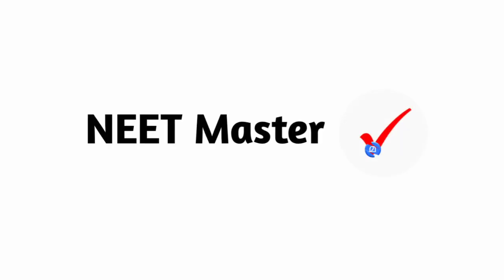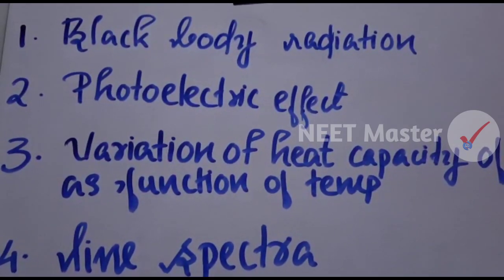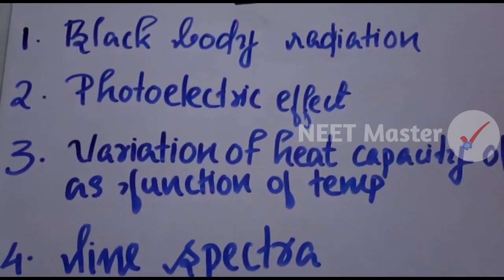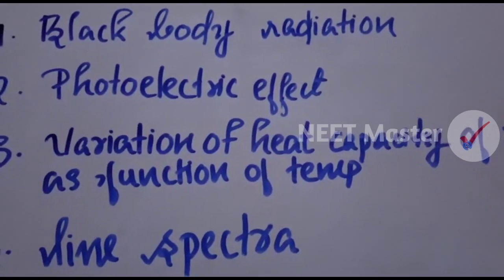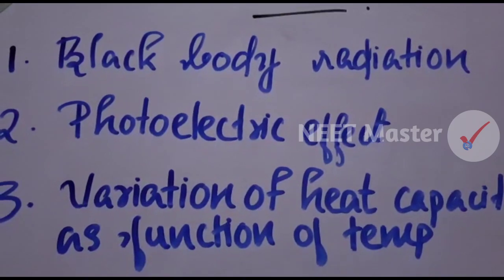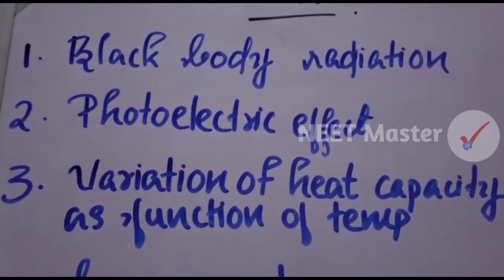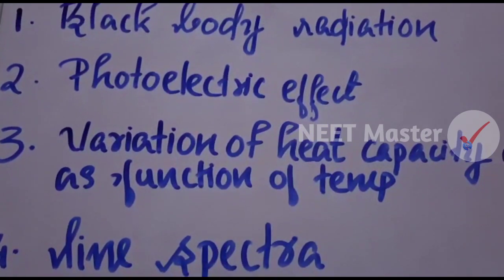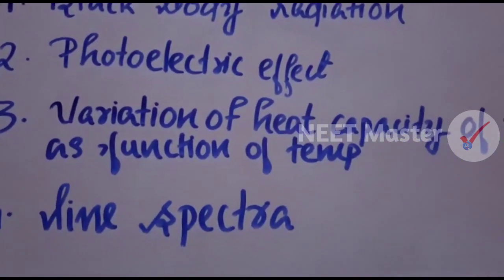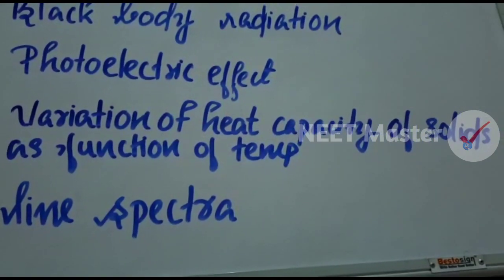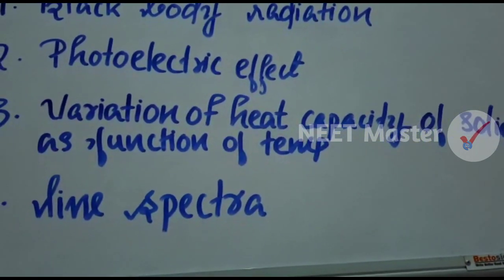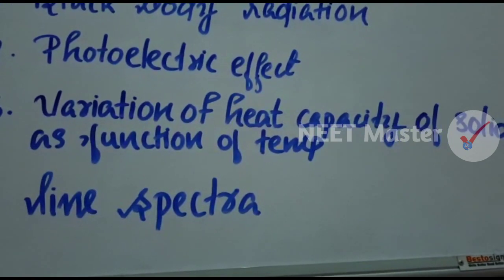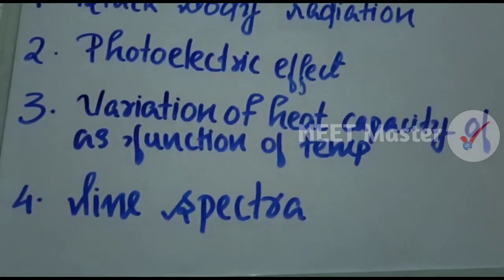We can explain the wave nature of light, and we can explain diffraction phenomena. But we can't explain certain phenomena: one is black body radiation, we can't explain the difference in heat capacity of solids as a function of temperature, and we can't explain the difference in light spectra.